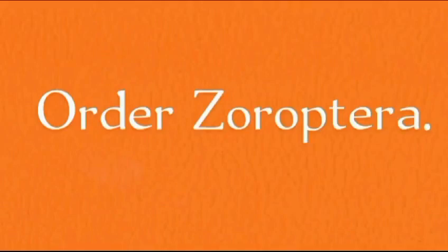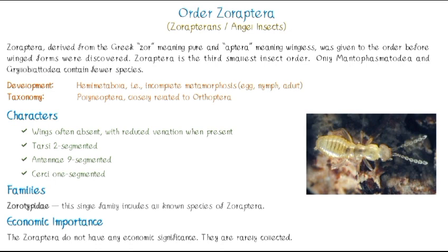In today's video, we are talking about Zoroptera, which is the common name of Angle Insects. The name is derived from the Greek word 'xoros', which means pure, and 'atera', which means without wings. They are the wingless insects.